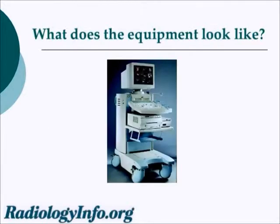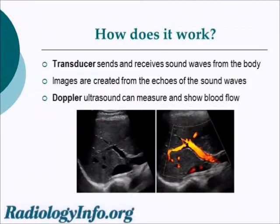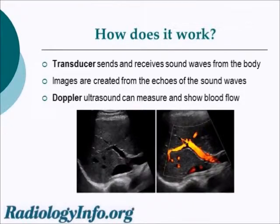An ultrasound machine looks sort of like a fancy computer with a keyboard and a screen on a mobile cart with wheels. To create an ultrasound image, a transducer, which is shaped somewhat like a wand, is used to send and receive sound waves. Those sound waves travel into the body, bounce off an object, and travel back. Those images are created from the echoes from those sound waves.